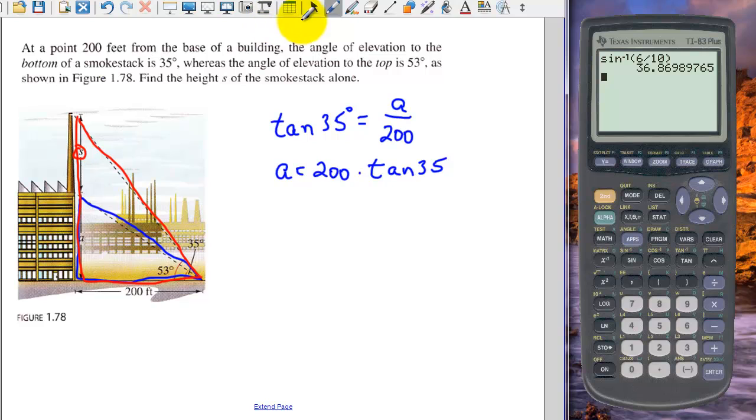We'll hold off making the calculations in a few minutes. And then if we use our red triangle, the total height, if we use our letters, is S plus A. And that's a 53 degree angle. And again, we have opposite over adjacent, so we can use our tan function.